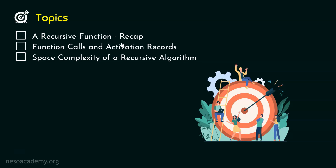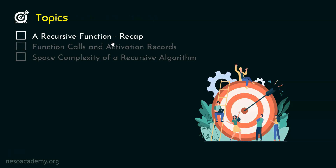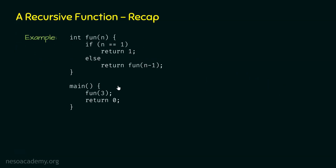We will first recall what we learned in the last lecture. We took an example of a recursive function and through that example, we observed certain things. We will recall those things as they will set the base for this lecture. Let's get a quick recap of the recursive function discussed previously. This function 'fun' calls itself within its own body, making it a recursive function, and we learned how the call stack behaves when it is called.